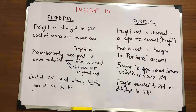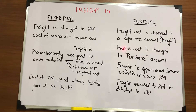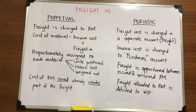Under the periodic inventory system, freight cost is charged in a separate account and maintained under a freight account. The invoice cost or purchase price of raw materials is charged under the purchases account. The freight is apportioned between issued and unissued raw materials inventory, and the freight allocated to raw materials is debited to work-in-process inventory together with the invoice price.